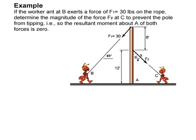If the worker ant at B exerts a force of F1 of 30 pounds on the rope, determine the magnitude of the force F2 at C to prevent the pole from tipping. That is, so that the resultant moment about A of both forces is zero.